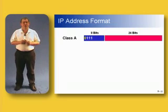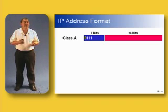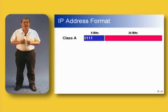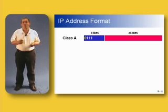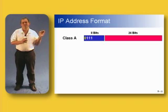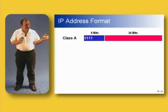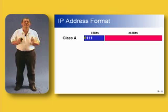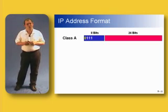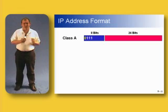It's all very well saying that we're going to have a class A address where the first 8 bits are considered network and the last 24 bits are host. But how do we tell a computer, a router, or a PC where to draw that network-host line? What was decided was to have the most significant bits tell the computer whether it's a class A, class B, or class C address. If there is a zero in the very first bit position, as the computer reads the address, it can say: this is a class A address, therefore the first 8 bits should be considered network and the last 24 bits should be considered host.